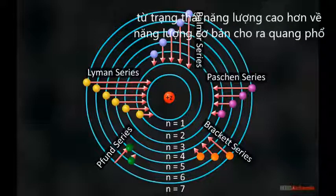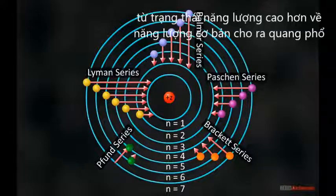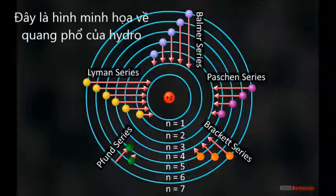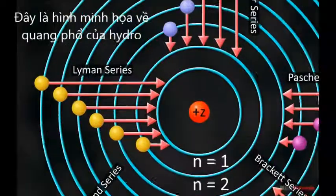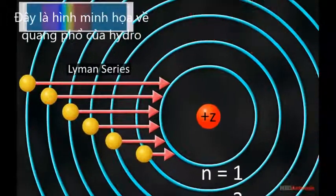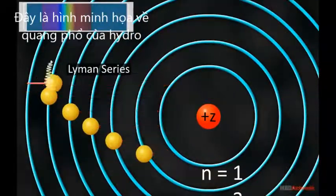The various spectral series of hydrogen atom can be represented with the help of an orbital diagram of an atom, as shown in the animation.